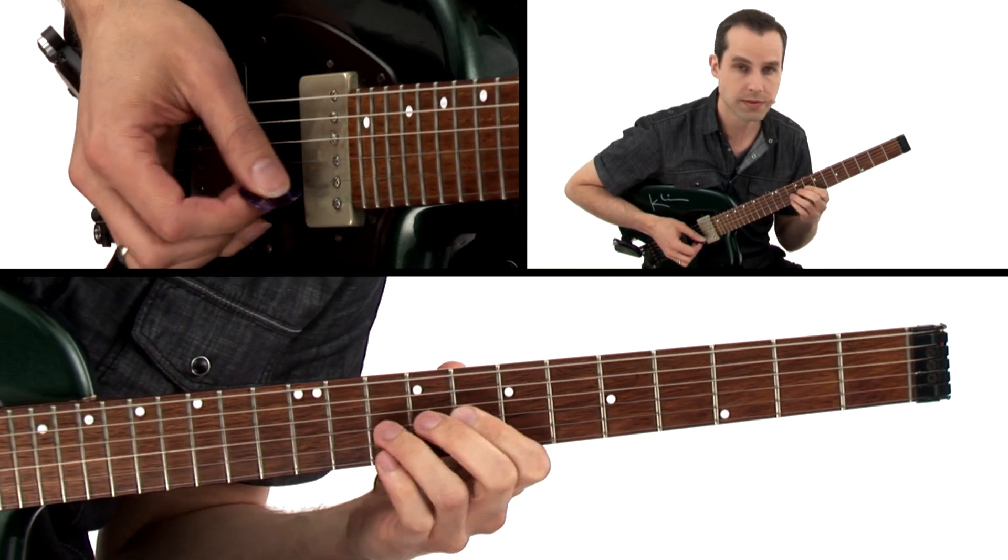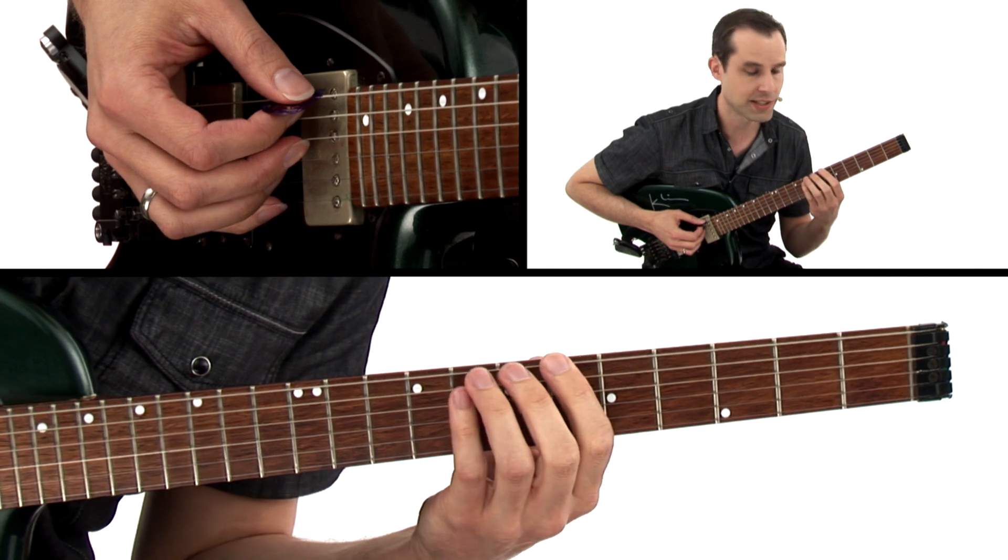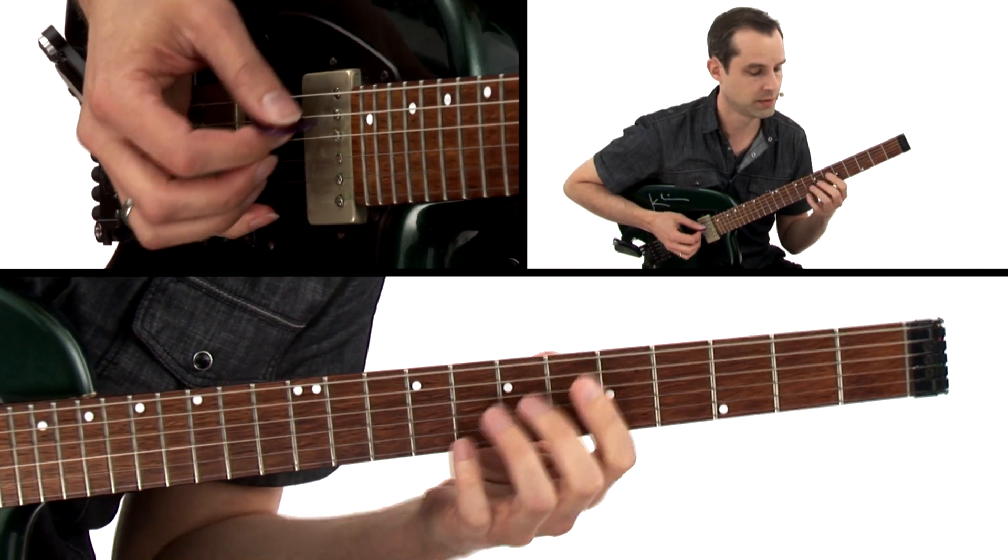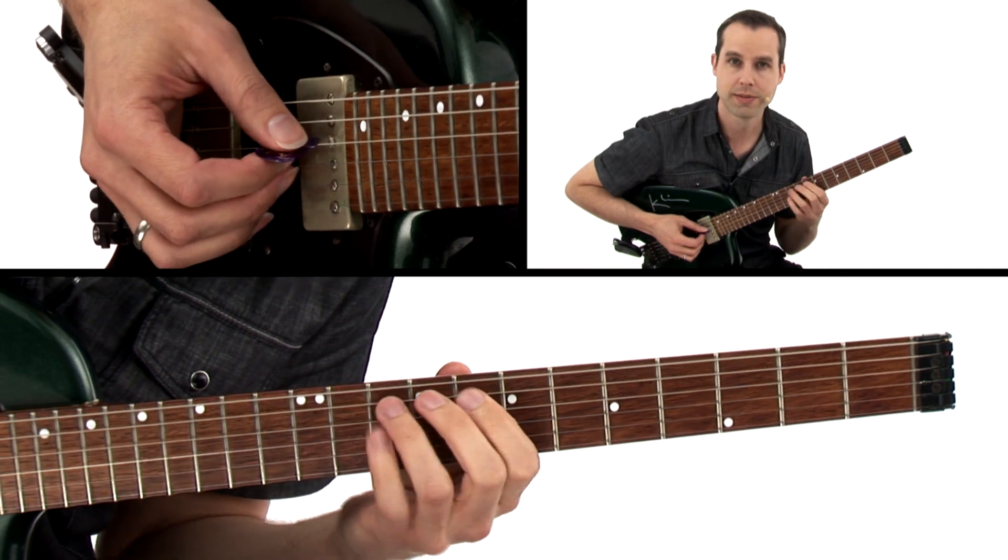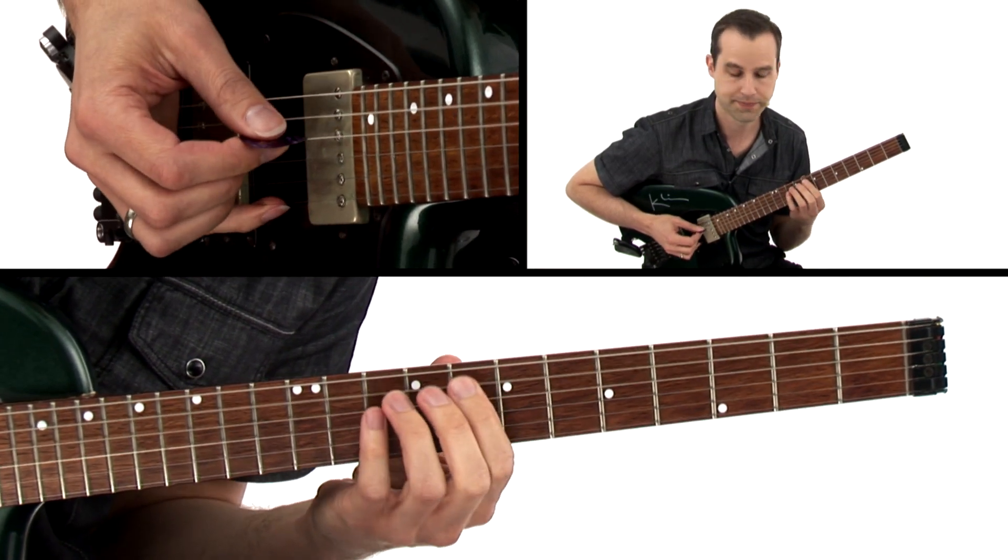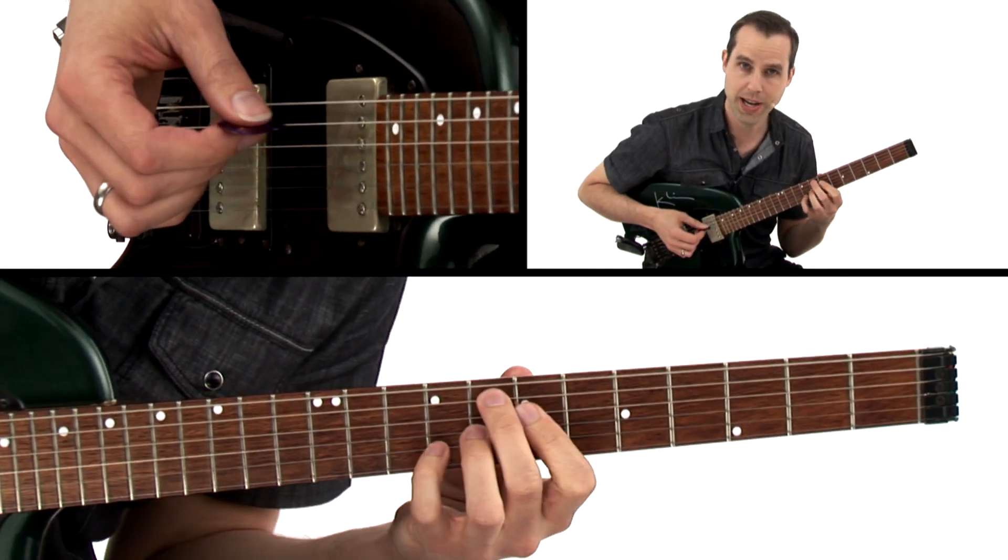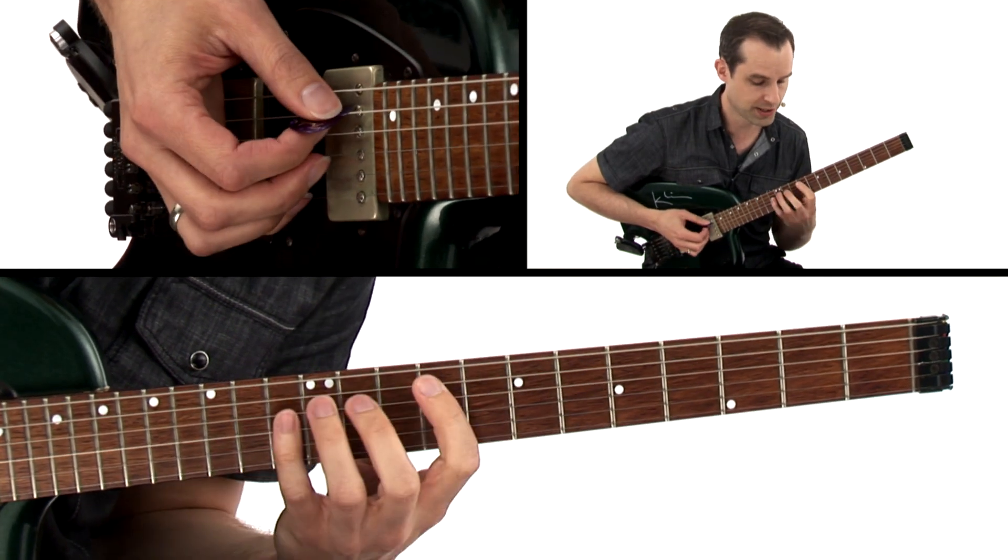We have F7, B-flat-7, then we go back to F7, then the F7 sharp 9. I'm going to play this arpeggio.